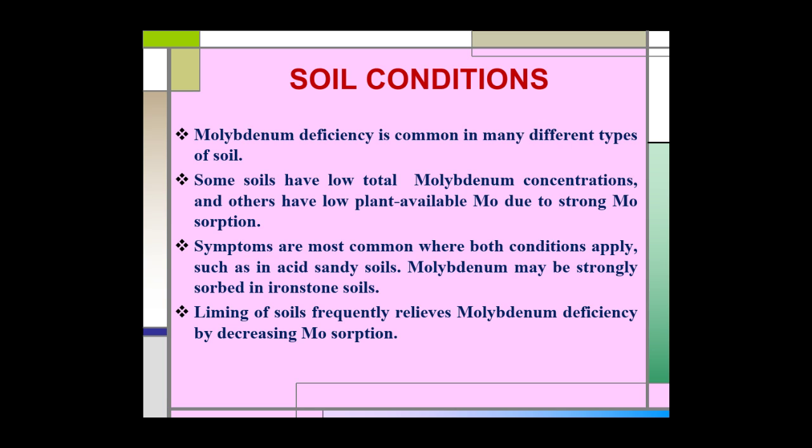Molybdenum deficiency is common in many different types of soil. Some soils have low total molybdenum concentrations, while others have low plant-available molybdenum due to strong molybdenum sorption. Symptoms are most common where both conditions apply, such as in acid sandy soils. Molybdenum may be strongly sorbed in ironstone soils. Liming of soils frequently relieves molybdenum deficiency by decreasing molybdenum sorption in the soil.